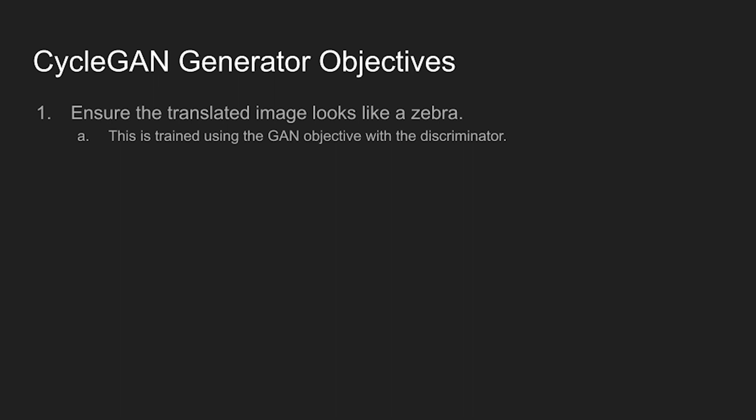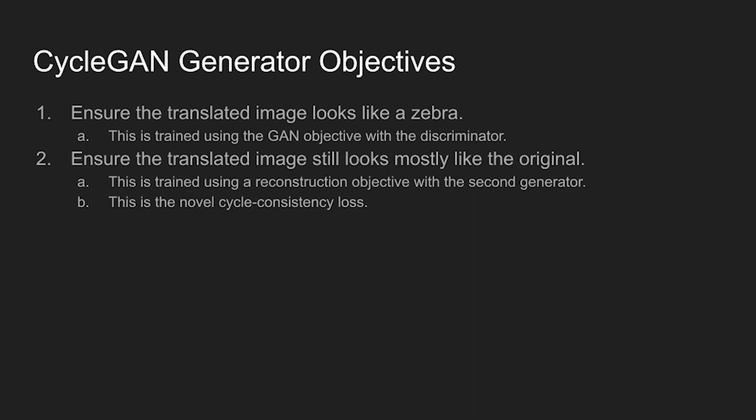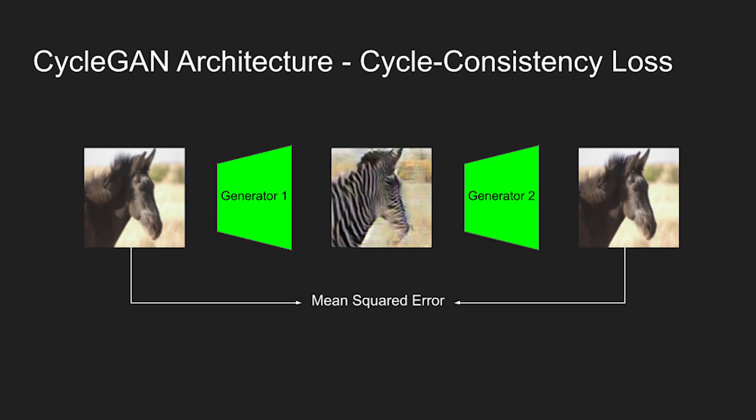If we were to only use this objective, however, the generator would still not be useful. Nothing would be stopping the generator from disregarding the content of the original image and making the final image whatever it thought would fool the discriminator best. Thus, the second objective of our CycleGAN should be to ensure that the translated image still looks like the original in some way. We can do this using the CycleConsistency loss and a second generator model. The two generators work together in this loss. The first generator translates the image however it feels necessary, then the second generator learns alongside it to translate the image back to the original. Both generators are penalized for any differences between the original image and the image that's been through both generators. This ensures that the main generator doesn't completely disregard its input, and using the second generator allows for flexibility in that translation process.